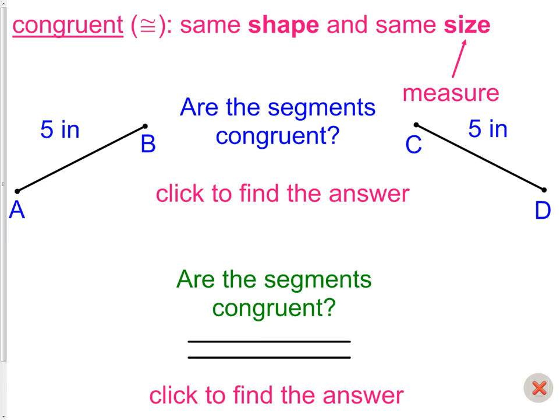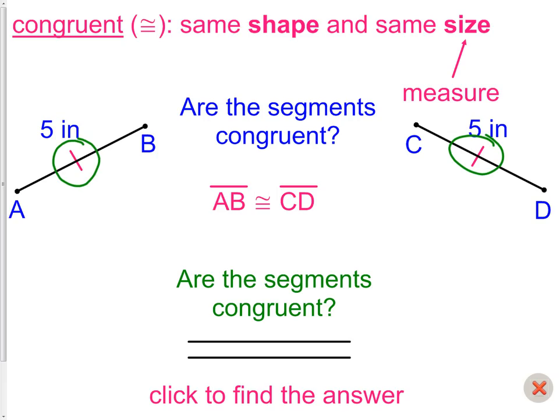So in this picture, we have, are these segments congruent? We have segment AB on the left, which is 5 inches. Segment CD on the right, which is also 5 inches. So are they congruent? Yes, they are. They are both segments and they both have the same length. Again, when we talk about congruency, we will often use these two little marks here that just showed up that are called congruency marks, often referred to as tick marks. Both of these lines have one tick mark, which means they are the same size.